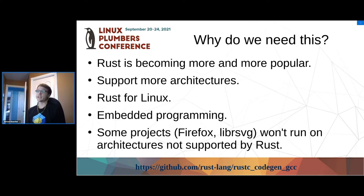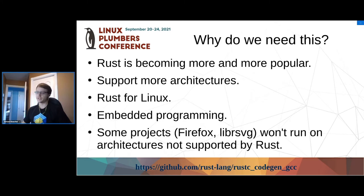Why do we need this project? The Rust language is becoming more and more popular and we might want to use it on architectures not supported by LLVM. There are projects like Rust for Linux, for Fox, and librsvg that might want to run on those architectures, and the embedded programming community might enjoy using this codegen for supporting other architectures.